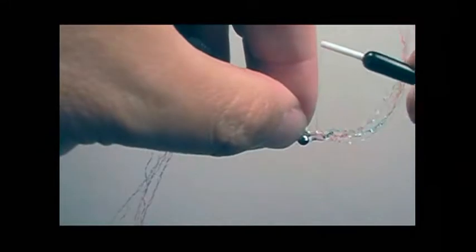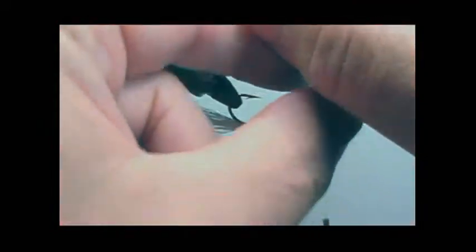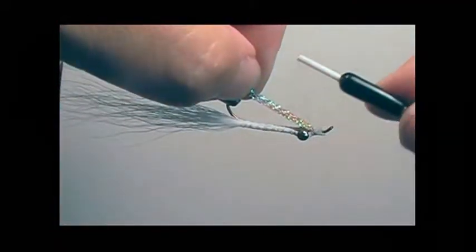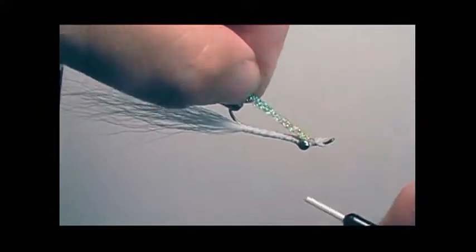With the rotary vise we'll just rotate it. We'll take some crystal flash and tie it right where the white bucktail is. The crystal flash will be slightly longer than the white bucktail belly.